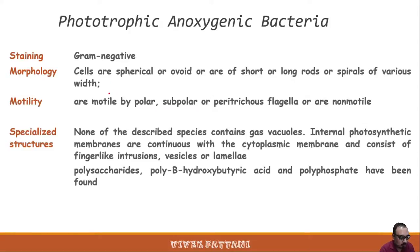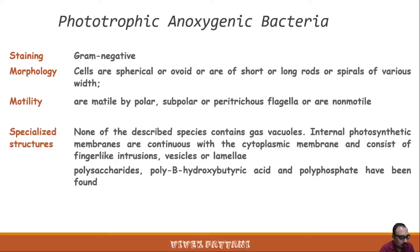Phototrophs are organisms which carry out photosynthesis, capturing energy from light and using this energy to manufacture carbohydrates from carbon dioxide. Photosynthesis occurs in green and purple bacteria under anoxygenic terms, and in cyanobacteria under oxygenic terms, as well as in algae and higher plants.